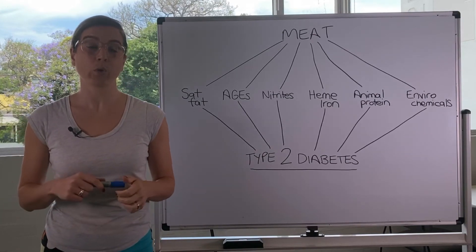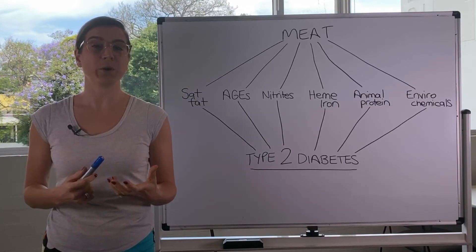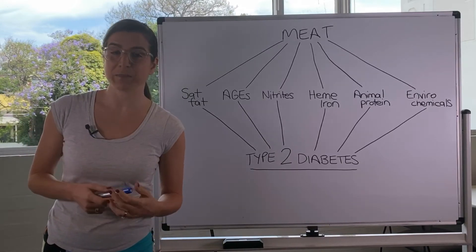So heme iron is a pro-oxidant. So it will trigger free radicals in the body, which can lead to oxidative stress and inflammation.